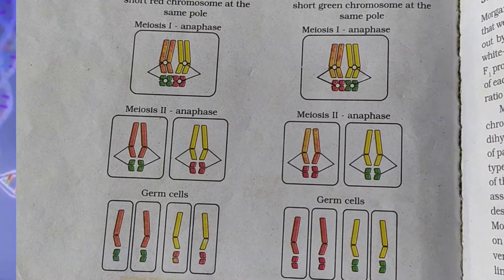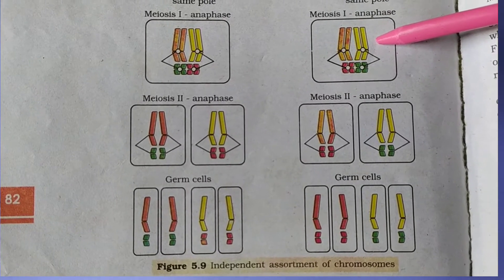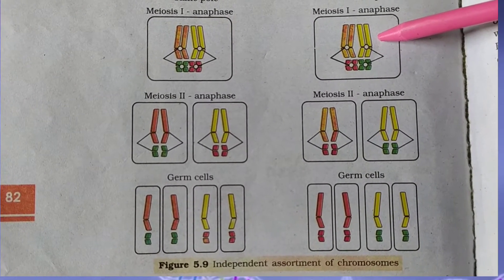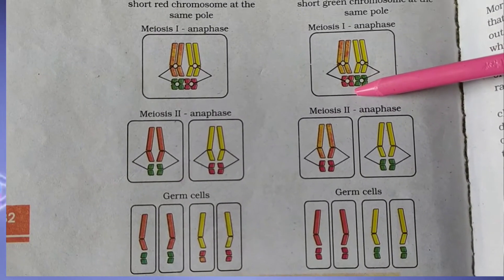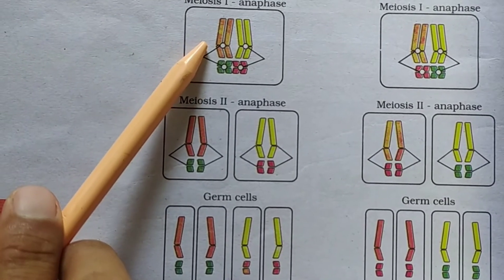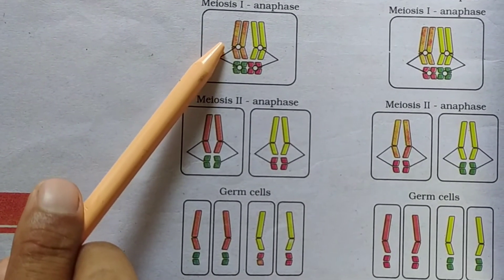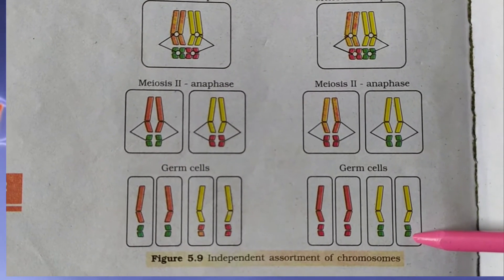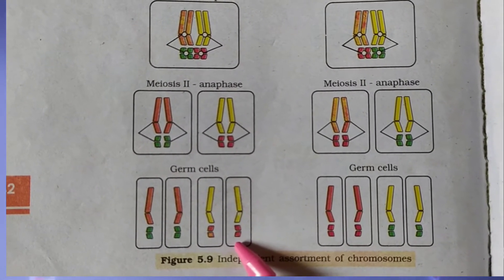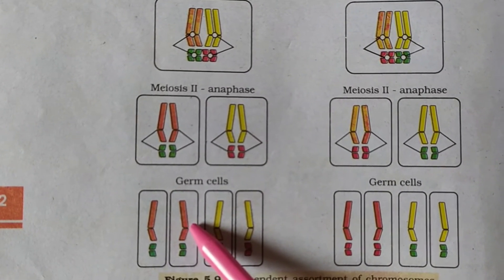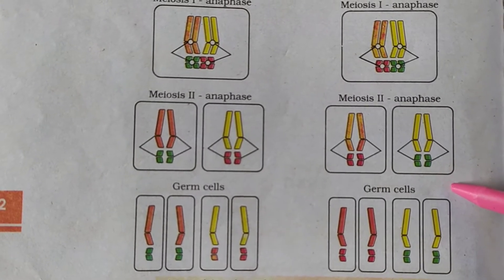This diagram shows the chromosome and law of independent assortment. Two pairs of chromosomes are present in the mother cell. A long yellow chromosome is paired with a long orange chromosome, and a green chromosome is paired with a short red chromosome. The segregation of the pair of long chromosomes is independently assorted with the segregation of short chromosomes. The yellow long chromosome can be assorted with the green chromosome, or it can also be assorted with the short red chromosome. Thus this diagram shows the chromosomal law of independent assortment.